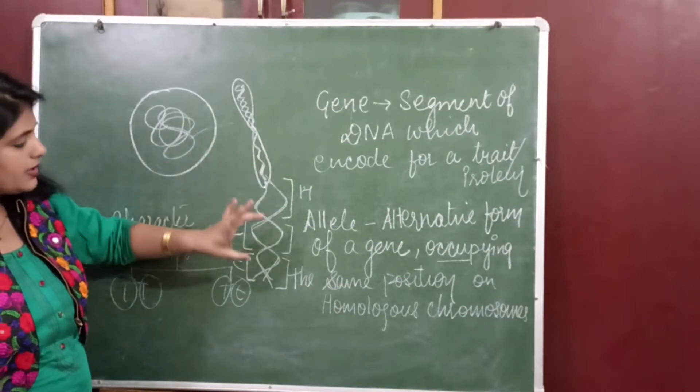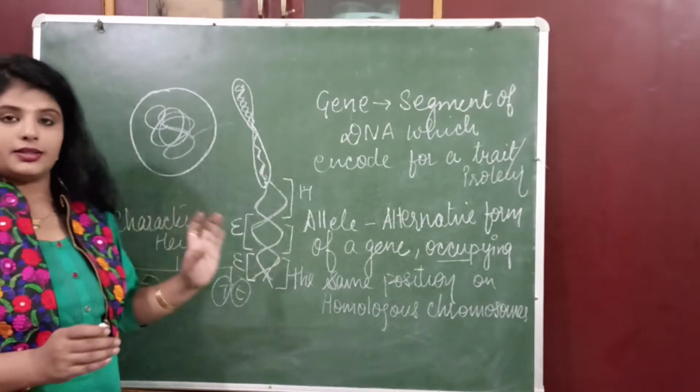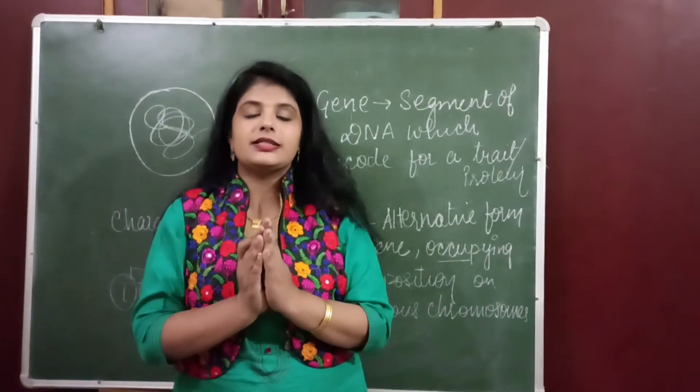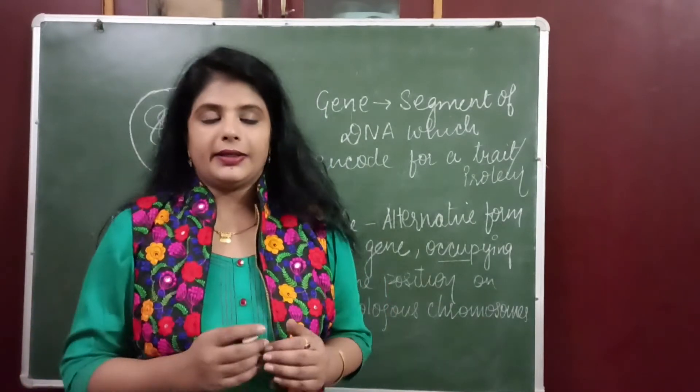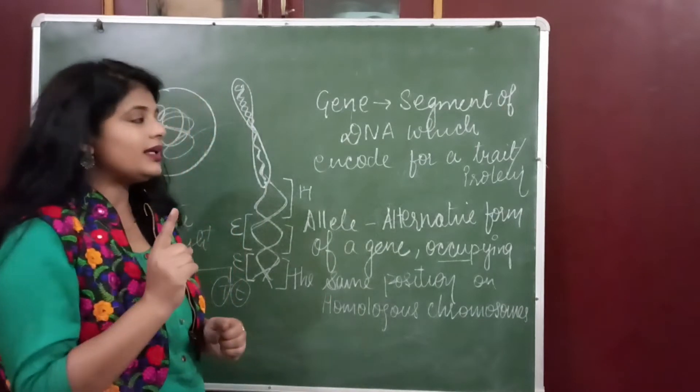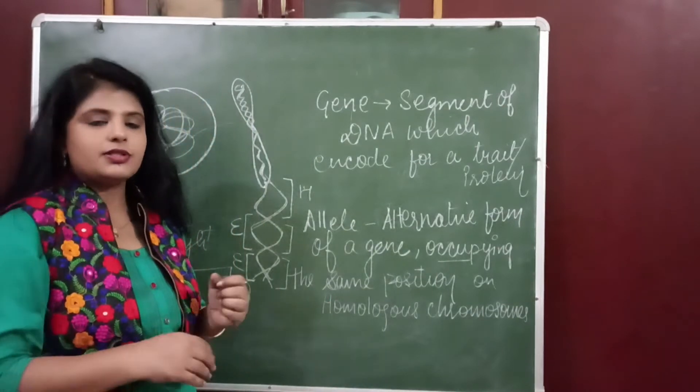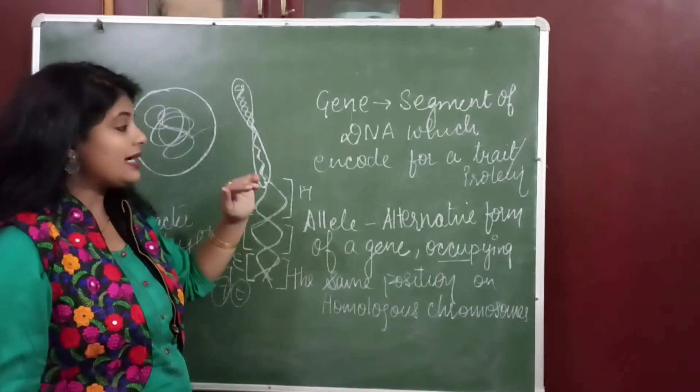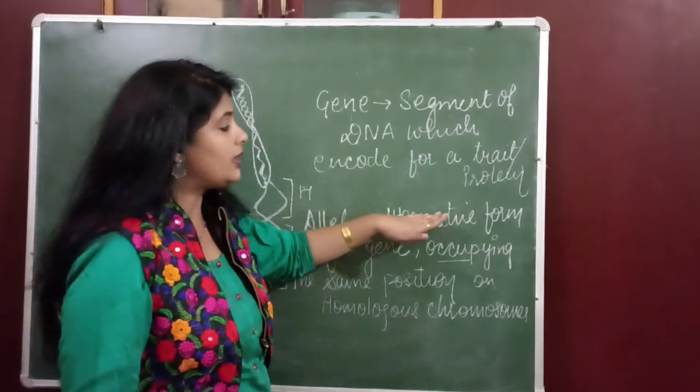So this is one gene, this is another gene, this is another gene. So what is gene? Gene is the segment of DNA. Now the another term is allele which is very confusing. What is allele? It is the alternative form of a gene.